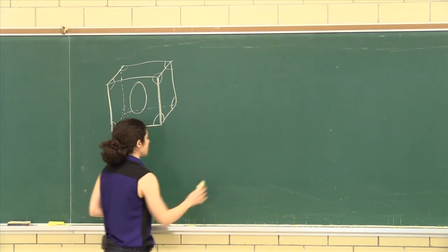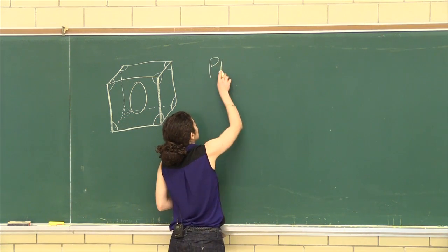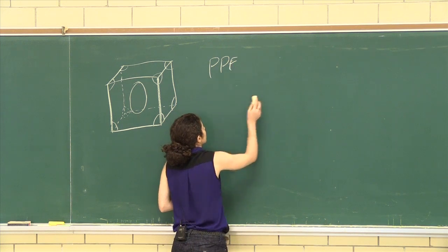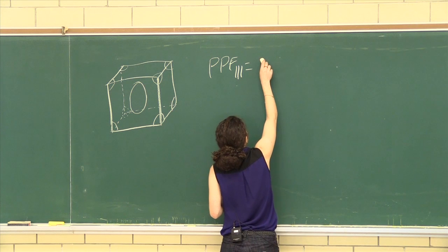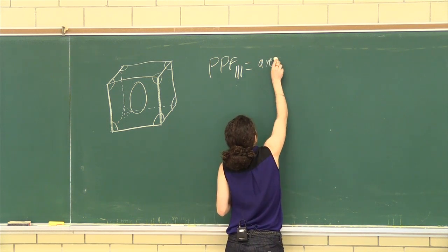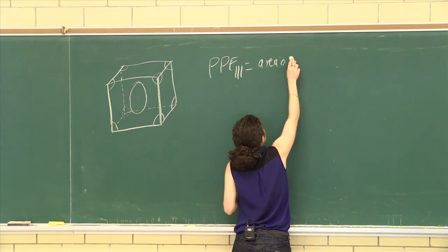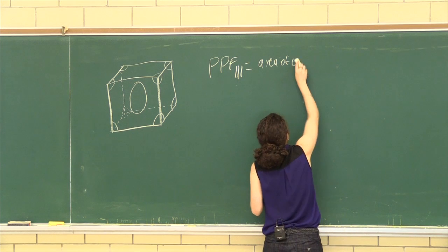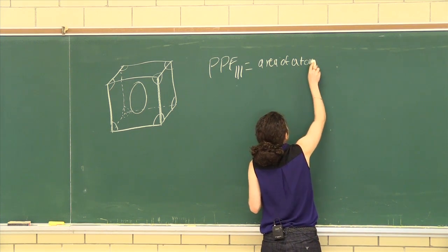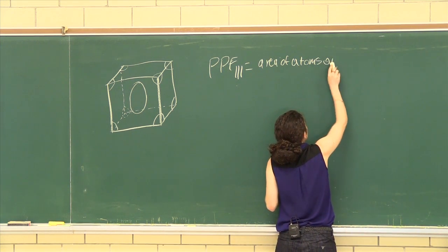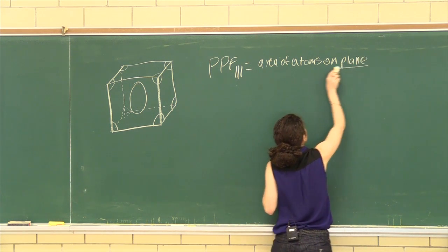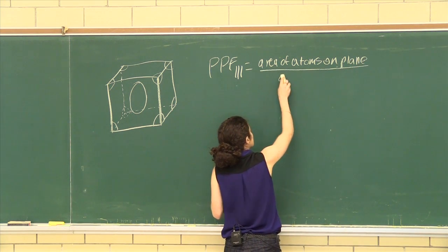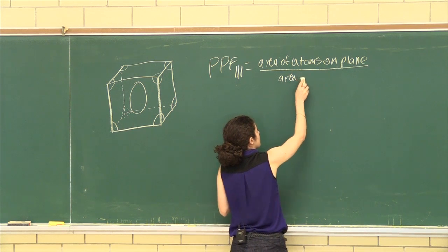So the planar packing factor for the 111 plane is equal to the area of the atoms on the plane over the area of the plane.